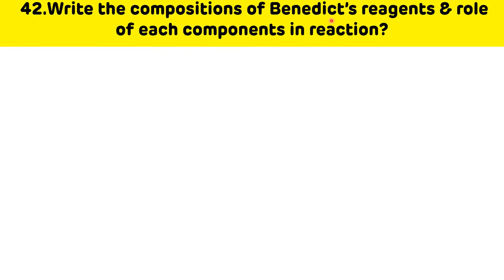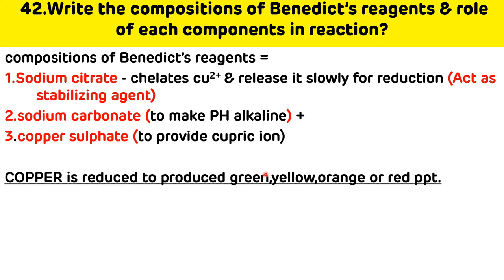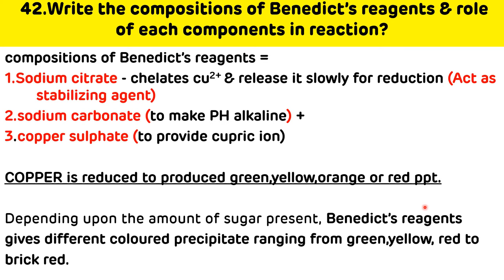Write the composition of Benedict's reagent and the role of each component. The components are: sodium citrate, sodium carbonate, and copper sulfate. Sodium citrate chelates Cu²⁺ and releases it slowly for reduction, also acting as a stabilizing agent. Sodium carbonate provides the alkaline medium. Copper sulfate provides cupric ions, which are reduced to produce green, yellow, orange, or red precipitate depending on the amount of sugar present.